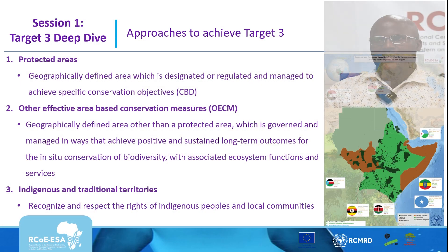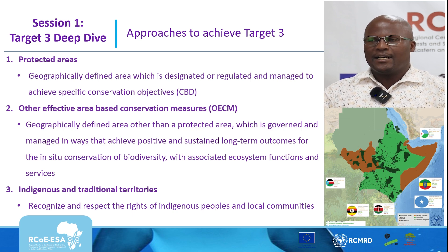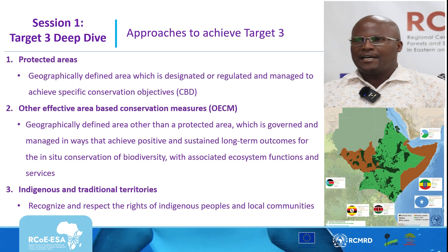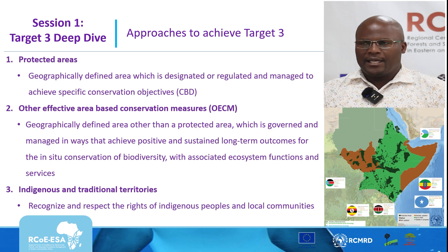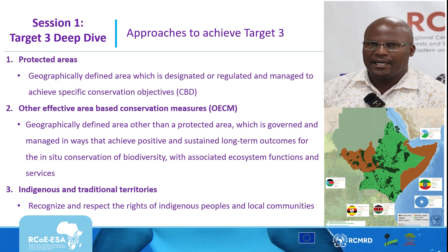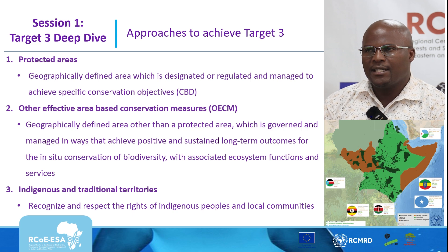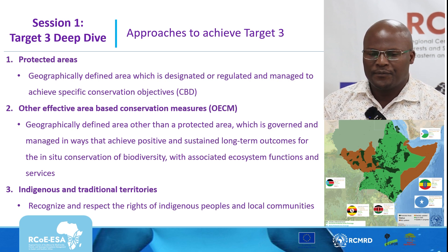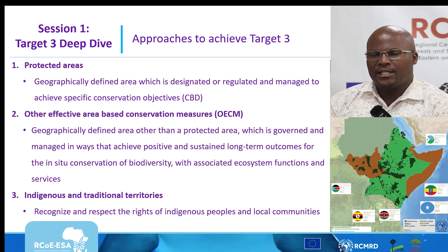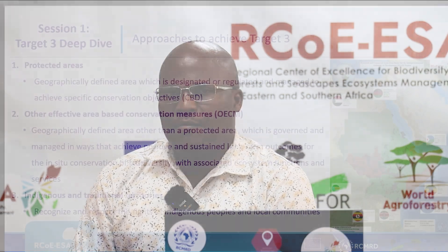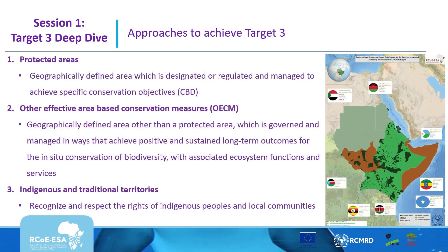There are three approaches in place to ensure that target 3 is achieved. The first is establishing protected areas — clearly defined areas that are managed to achieve conservation objectives. The second is Other Effective Area-Based Conservation Measures, or OECMs — areas that are not protected areas but are managed or governed in a way that achieves conservation objectives. The third is indigenous and traditional territories, where indigenous people and local communities practice cultures and traditions that allow for conservation of biological diversity within ecosystems.